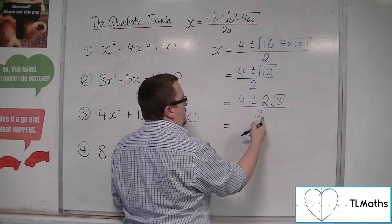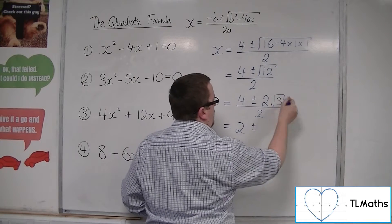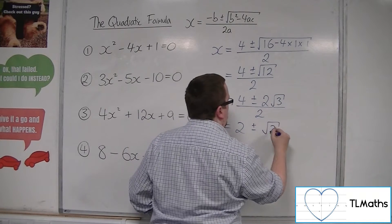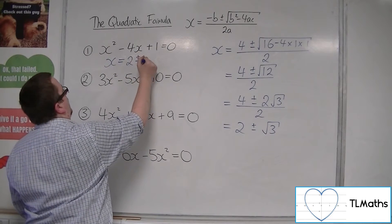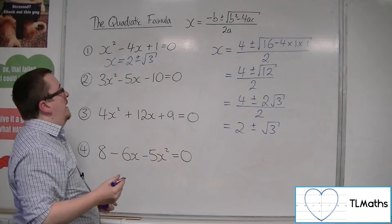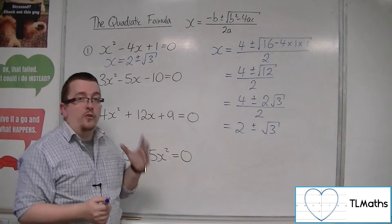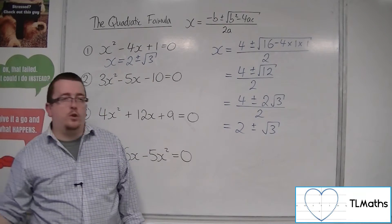So 4 divided by 2 is 2, plus or minus 2 root 3 divided by 2, so root 3. So x equals 2 plus or minus root 3, and these are the two solutions for the first quadratic equation.